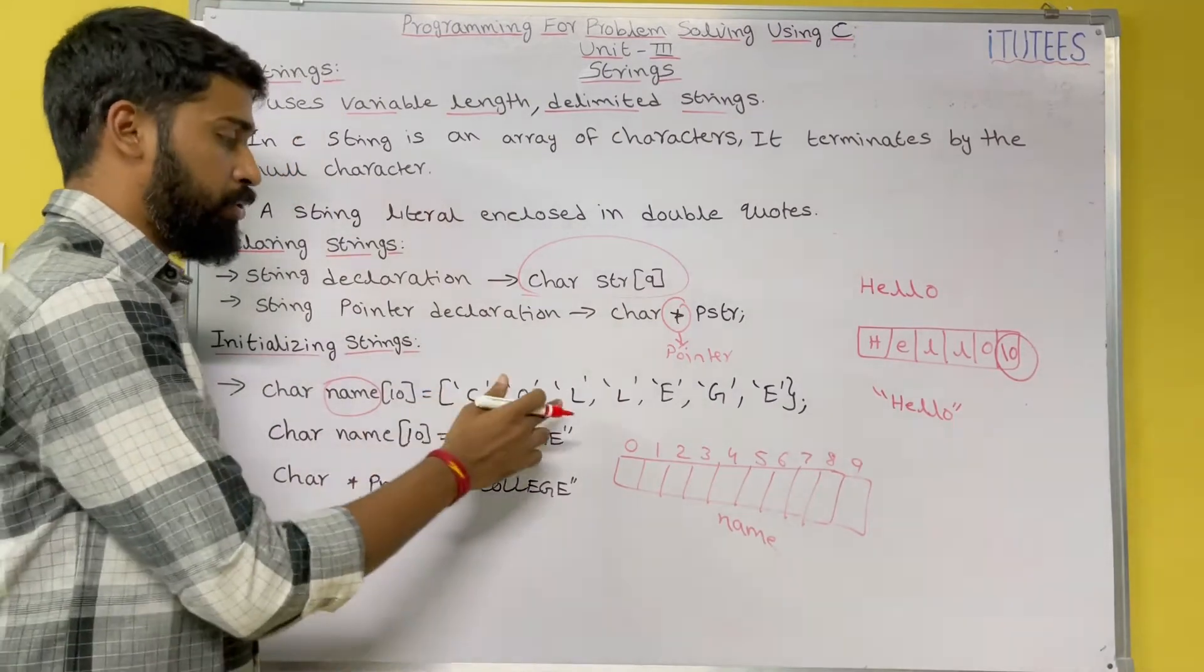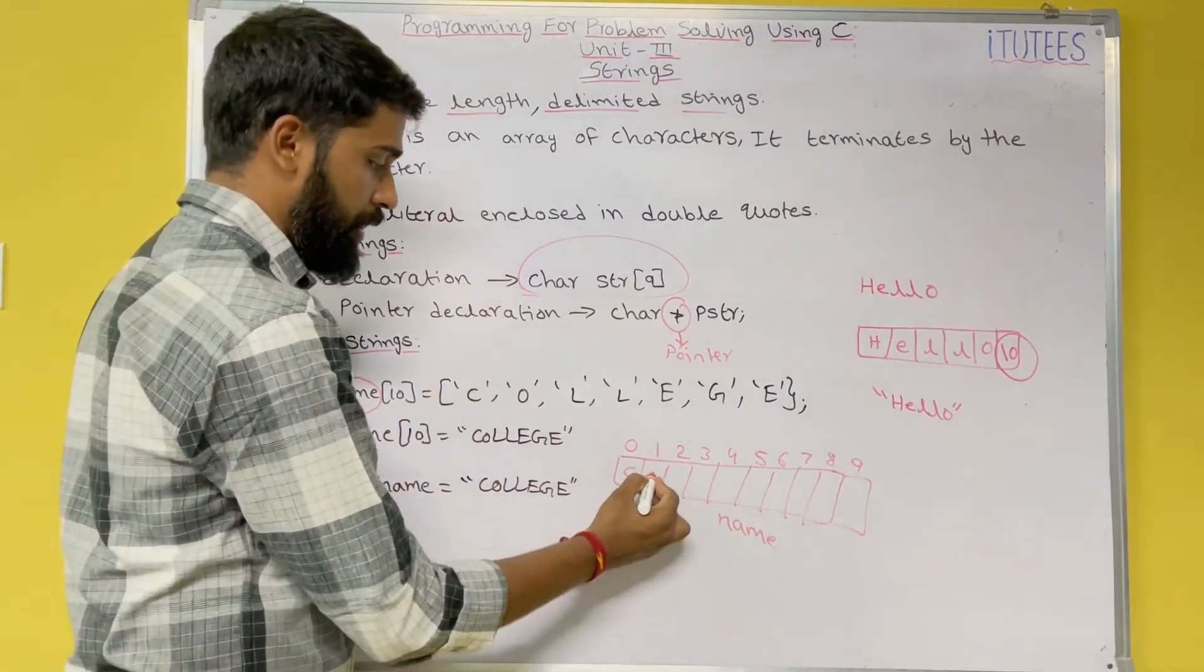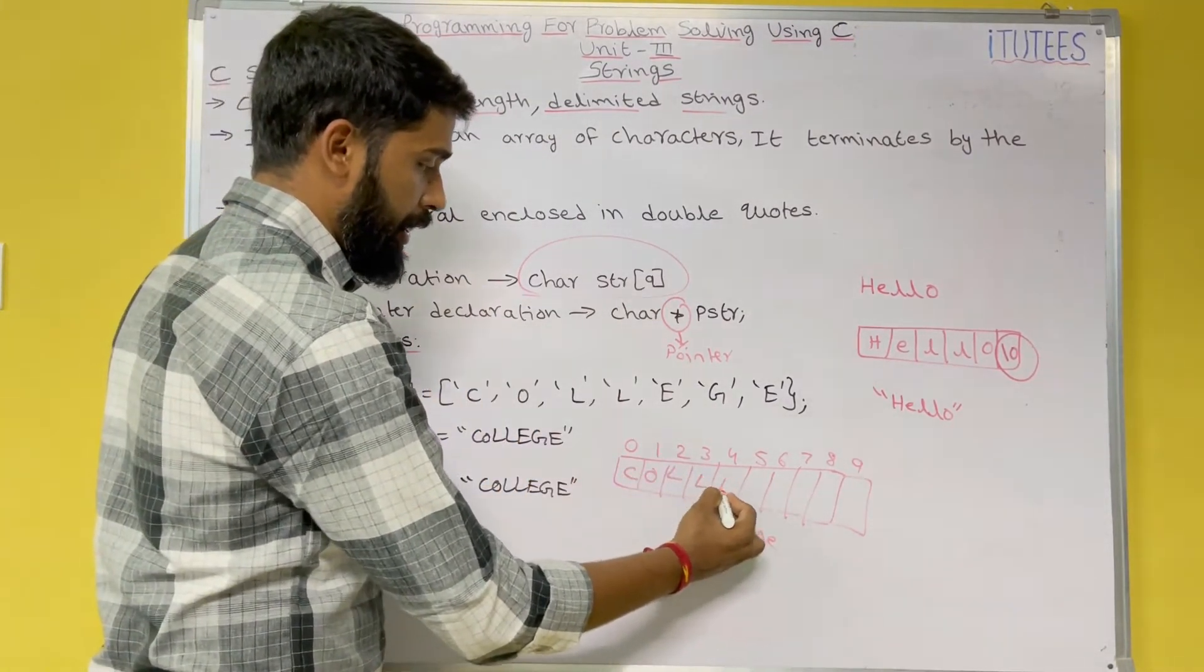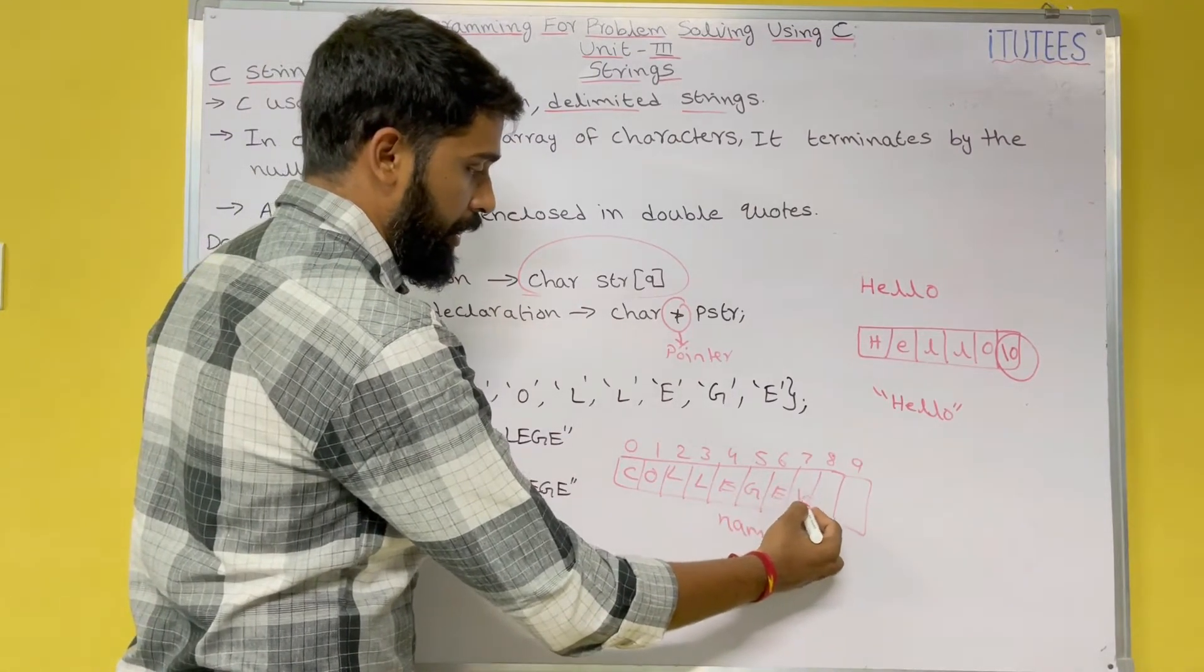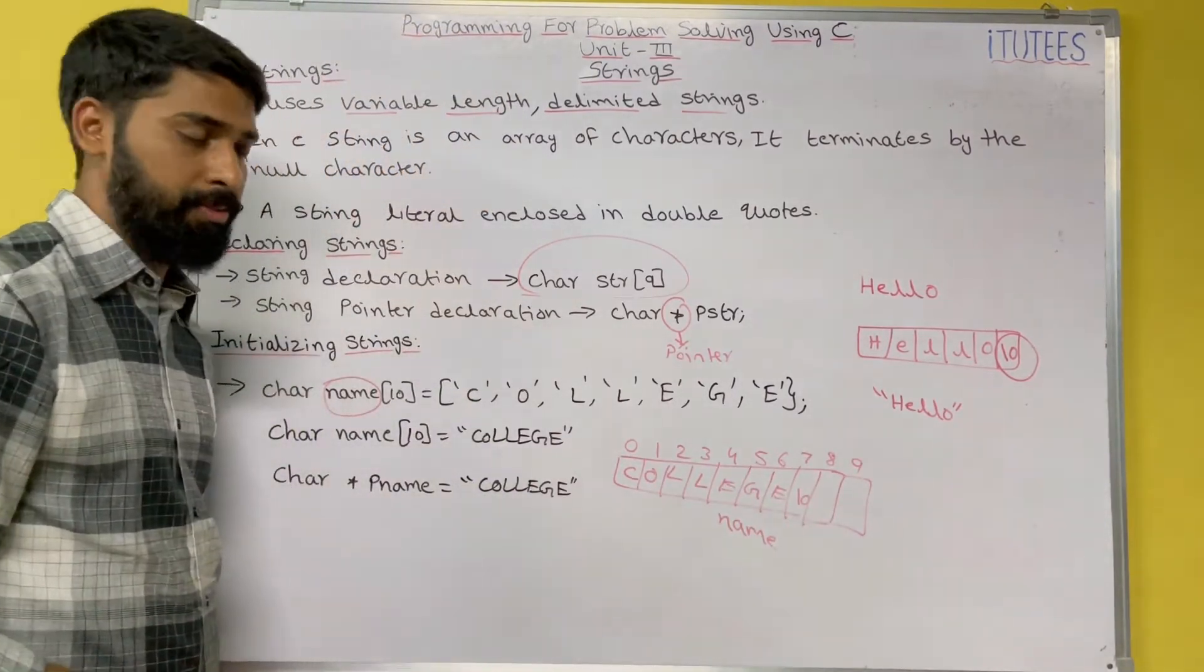In this, I store these characters: c, o, l, l, e, g, e, and the string is slash zero.